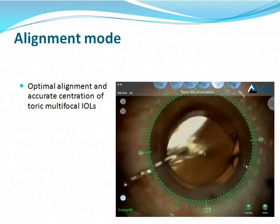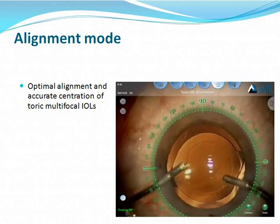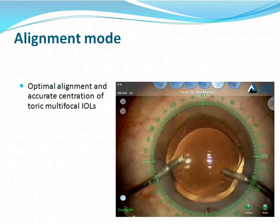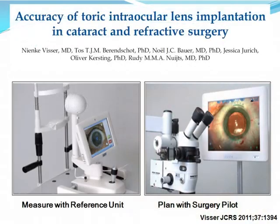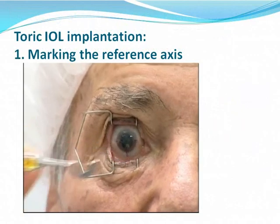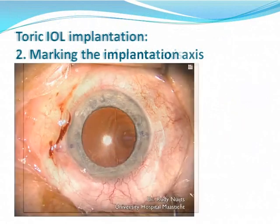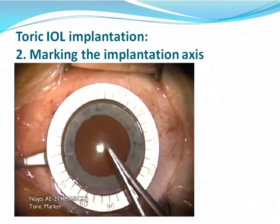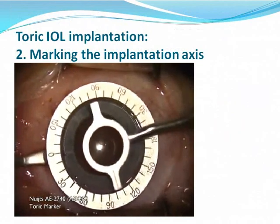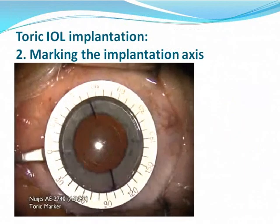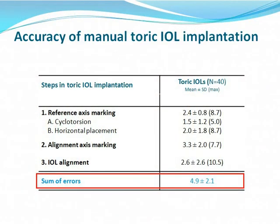For the toric multifocal you can see the alignment marks on the lens and the nice parallel alignment with the lens itself. We have looked at our personal error in our manual marking technique, which was recently published. It was a manual marking technique using a bubble marker in combination with the Mendez ring, which is a good way of marking the alignment axis when using a manual technique. The mistakes can occur in three steps: due to cyclotorsion, to the horizontal placement of reference marks, to the placement of alignment marks, and also to the actual alignment of the lens.